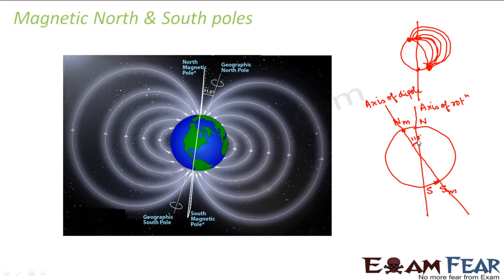So this is how magnetic north and magnetic south poles were defined. There is a separate geographic north and south pole and a separate magnetic north and south pole. When we talk about the magnetic field lines of the earth, we talk about the magnetic north pole and magnetic south pole. We generally denote them with a subscript m — that is Nm for magnetic north and Sm for magnetic south.